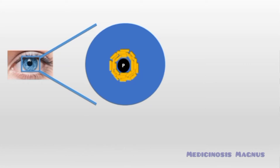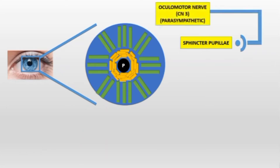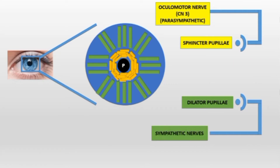Around the pupil there are circular muscles called the sphincter pupillae, supplied by the parasympathetic nerves running via the oculomotor nerve (cranial nerve 3). The muscles radiating outward, shown in green, are called the dilator pupillae, and they are supplied by the sympathetic nerves. Remember: sphincter pupillae — parasympathetic; dilator pupillae — sympathetic.